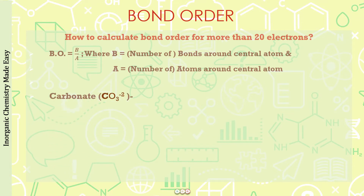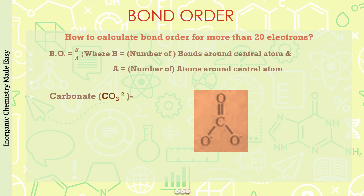Quickly applying trick two to the carbonate ion: from the lowest structure, the number of bonds about the central carbon atom is four, and the number of atoms about the central atom is three. So four divided by three gives bond order as 1.33 — again the same value, and you did not have to draw any resonating structures.